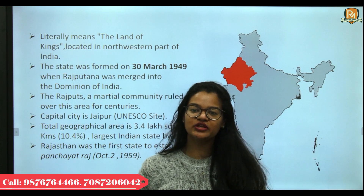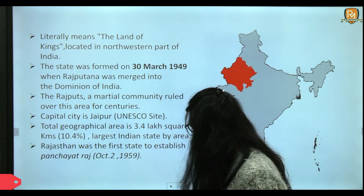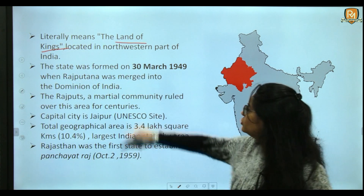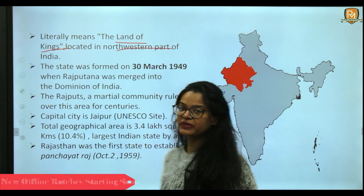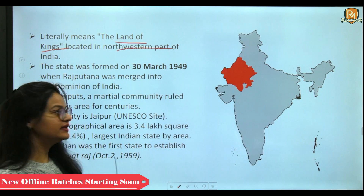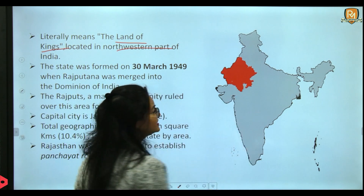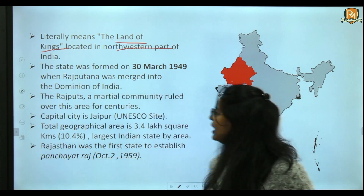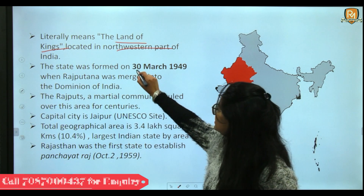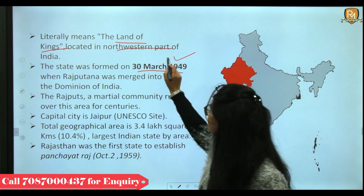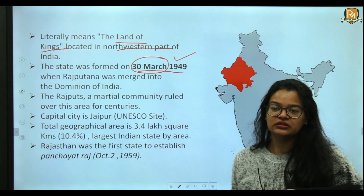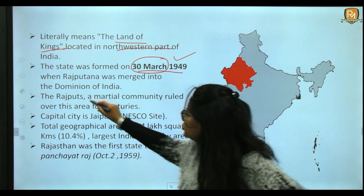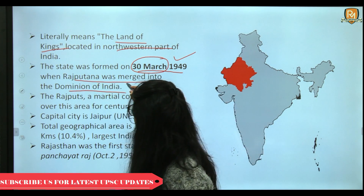Rajasthan is a combination of two words — Raj and Sthan — meaning the land of kings. This state is located in the northwest part of India. It was formed on 30th March 1949, which is celebrated as Rajasthan Day, when Rajputana was merged into the Dominion of India.